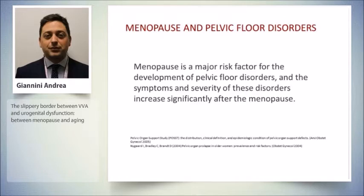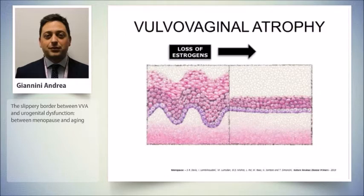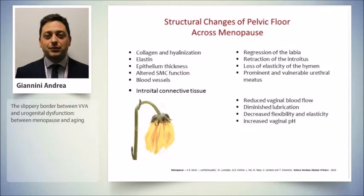Not only from a vulvovaginal atrophy point of view — we know that loss of estrogen is characteristic of vulvovaginal atrophy — but in general it is interesting to underline that after menopause, and also during menopausal transition, a structural change of the pelvic floor is evident. This includes changes in collagen, elastin, epithelium thickness, and altered function of pelvic muscles, blood vessels, and periurethral connective tissue.